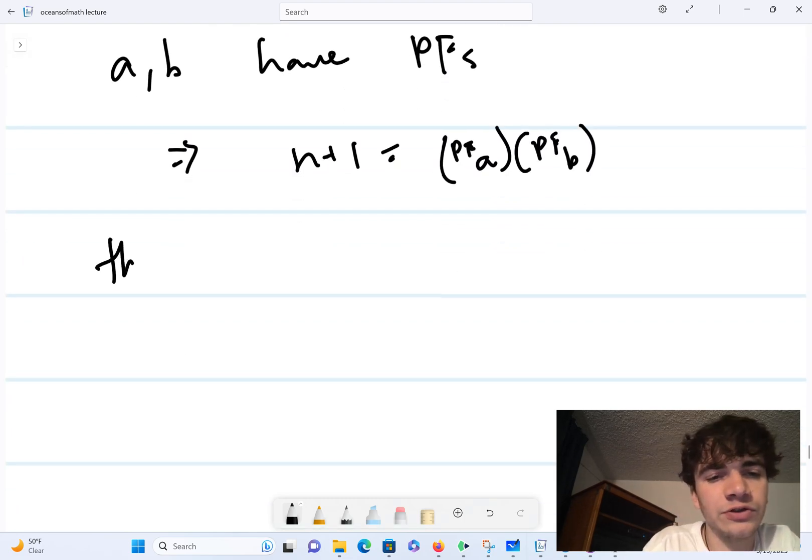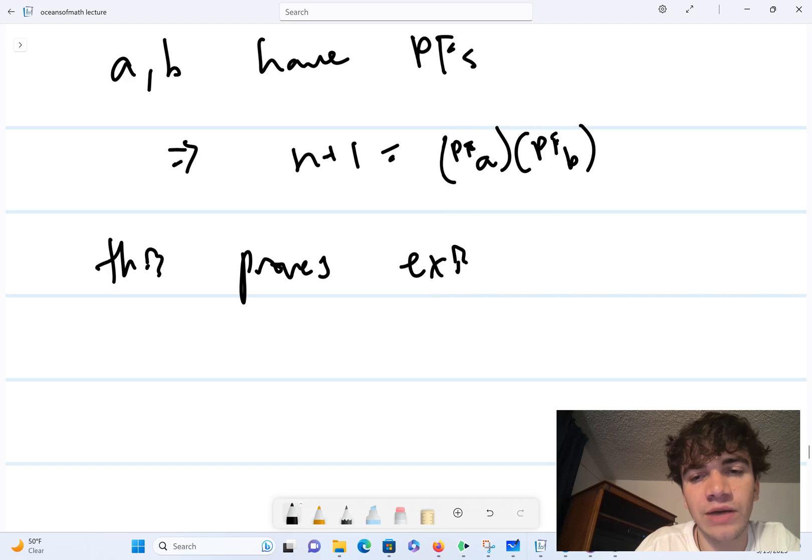And this is a prime factorization of n plus one. So in either case, if n plus one is composite or prime, we've physically constructed a prime factorization. And so this proves existence of the prime factorization by strong induction.